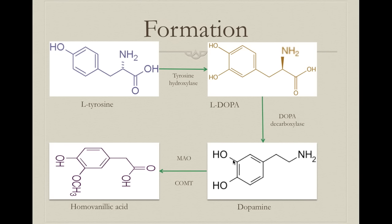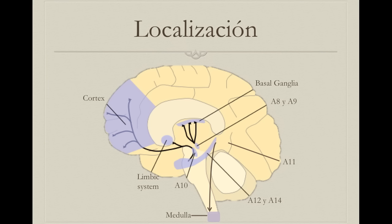Dopamine is then eliminated so it doesn't create an overly prolonged signal — we want punctual messages. The enzymes monoamine oxidase (MAO) and catechol-O-methyltransferase (COMT) transform dopamine into homovanillic acid. It's important to mention that MAO and COMT also help in the metabolism of other catecholamines like noradrenaline and adrenaline.